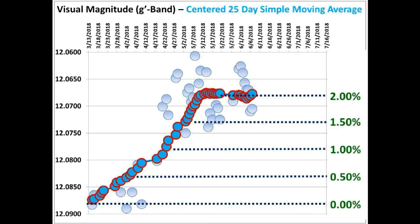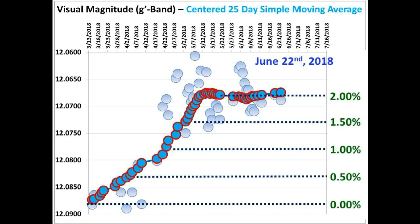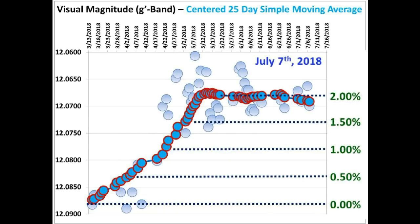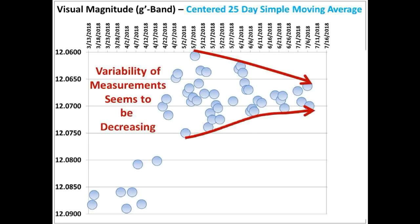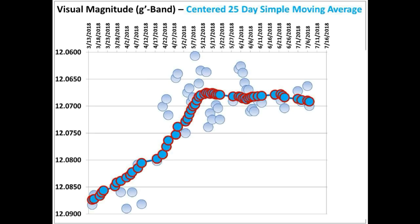This is the centered 25-day simple moving average for June 7th, June 8th, June 10th, the 12th, the 19th, the 22nd, the 23rd, the 24th, July 1st, July 3rd, the 6th, and finally July 7th. If you take a look at Bruce Gary's g-band measurements only, you can see that the variability in those measurements seems to be decreasing over time, but we're not quite sure why this is happening.